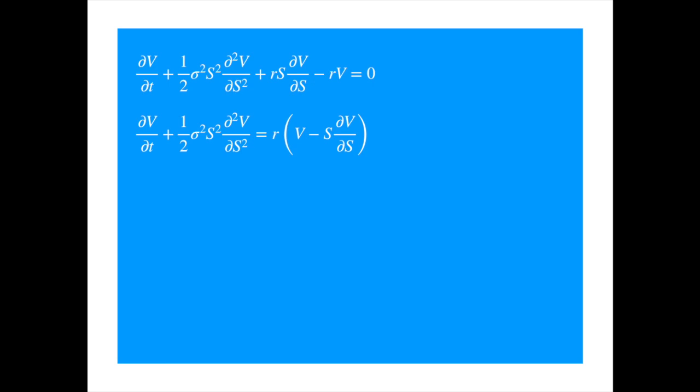The left-hand side is essentially representing how the value of the delta hedged option changes in an infinitesimal period. The first term captures the impact of the shortening maturity, and the second term the gamma impact, which is the risk that remains after the delta is hedged.